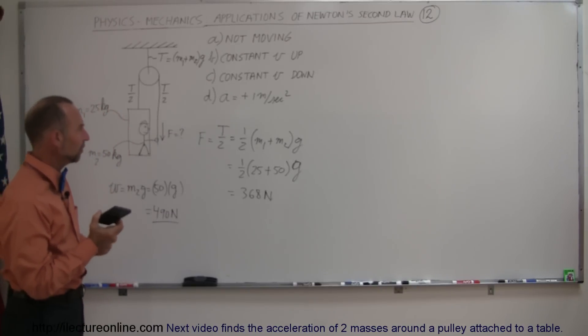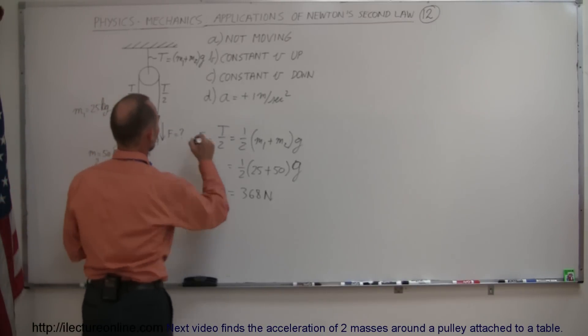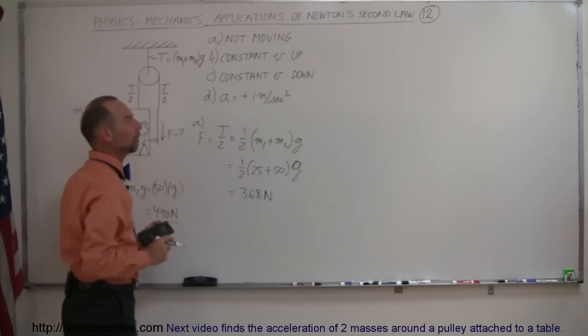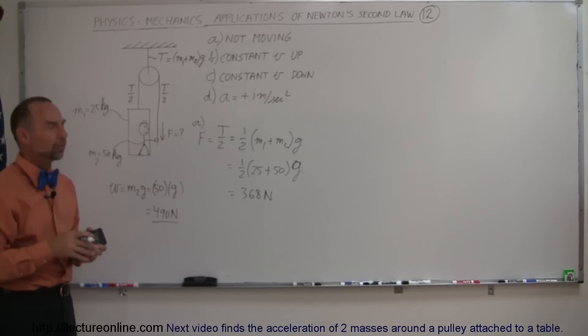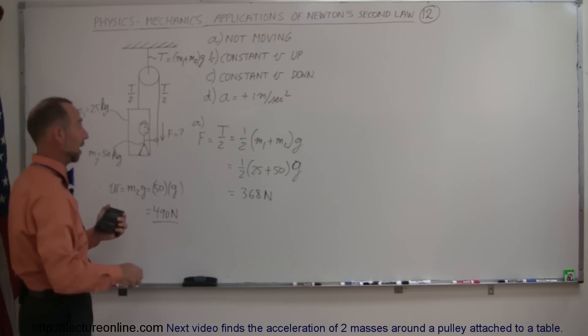Now what happens when we do part B? So this is part A. What happens when we do part B? Now the box needs to be moving upward at a constant speed. Now it turns out, if there's no acceleration, that means there's no extra force required. So that turns out that for part B, the force would be exactly the same.